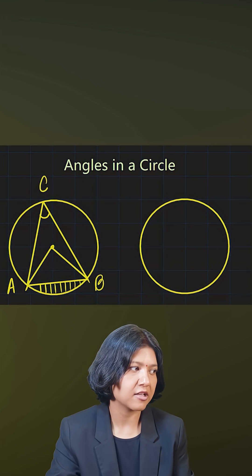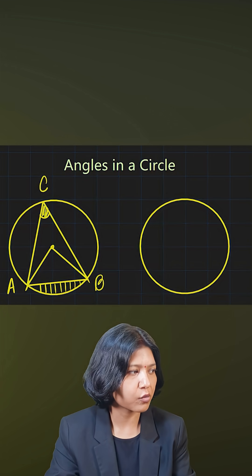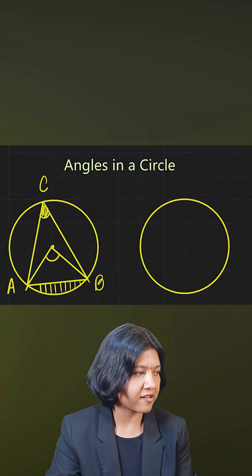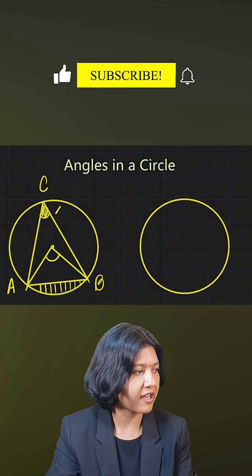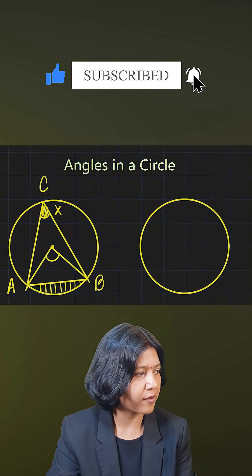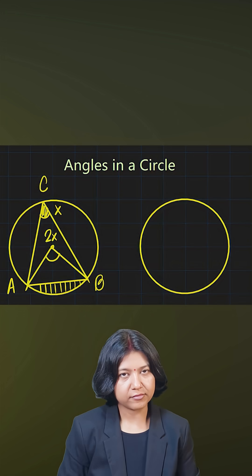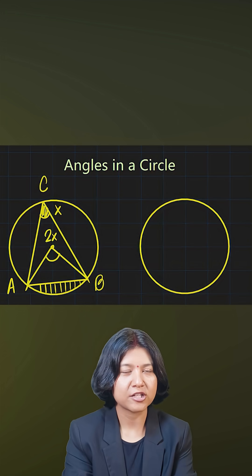Angle C is in the major segment. So whatever the angle is, angle C, the angle at the center will simply be double of that. So let's say if angle C is x, then at the center it's always double. The central angle is double the angle that is made on any point in the same segment.